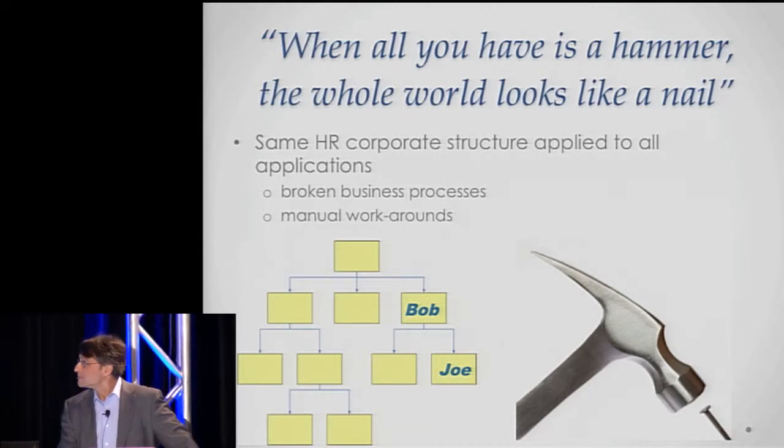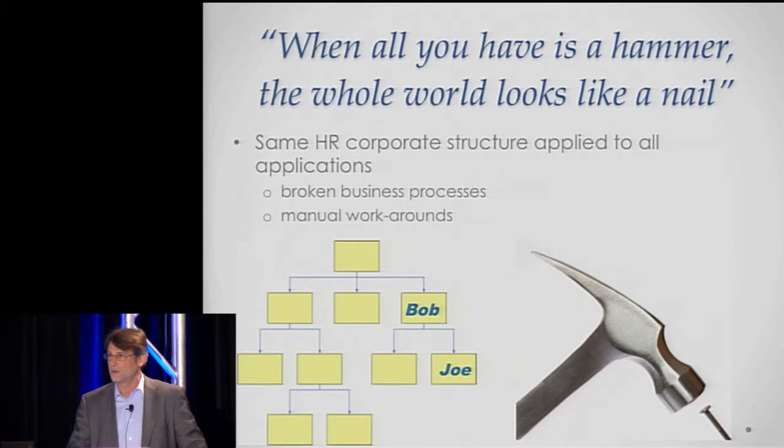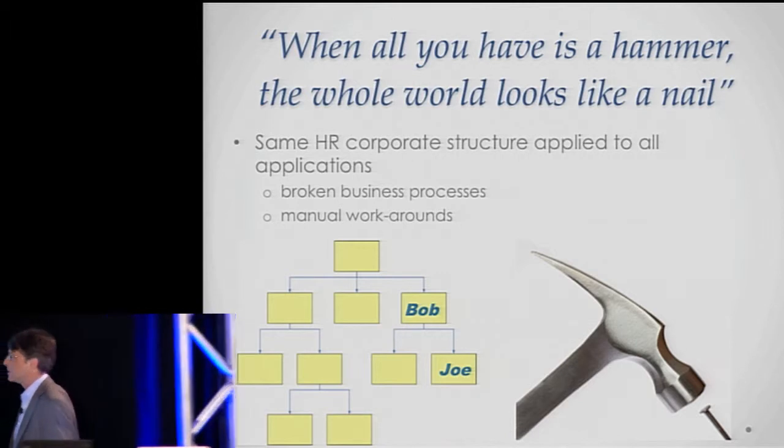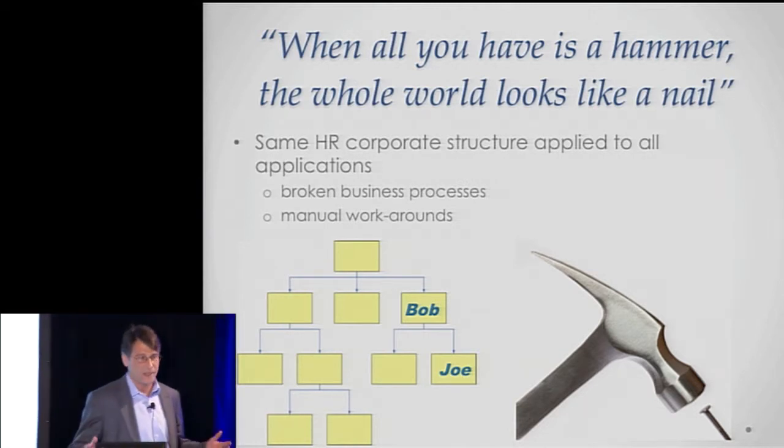The problem is you only have one organizational structure that's used by each of the software programs used in the company. And the only relationship that's categorized is that Joe reports to Bob. That's the only relationship that can be used in any workflow in any software. And that's a problem because Bob's a high-level executive and isn't really the right person to approve transactions. Heck, he even just recently started using a computer.